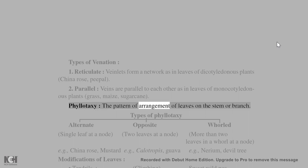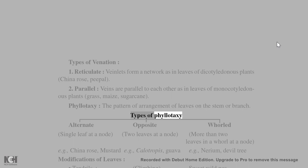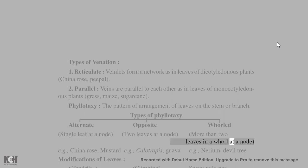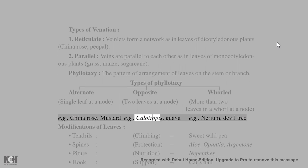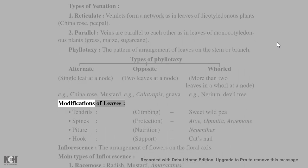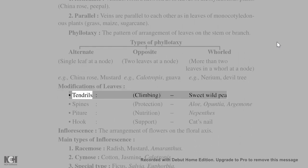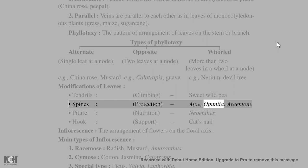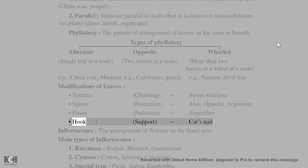Phyllotaxy is the pattern of arrangement of leaves on the stem or branch. Types: alternate (single leaf at a node, e.g., China rose, mustard), opposite (two leaves at a node, e.g., Calotropes, guava), and whorled (more than two leaves at a node, e.g., Nerium, devil tree). Modifications of leaves: tendrils for climbing (sweet pea, wild pea), spines for protection (aloe, opuntia), and pitcher for nutrition (Nepenthes), hooks for support.